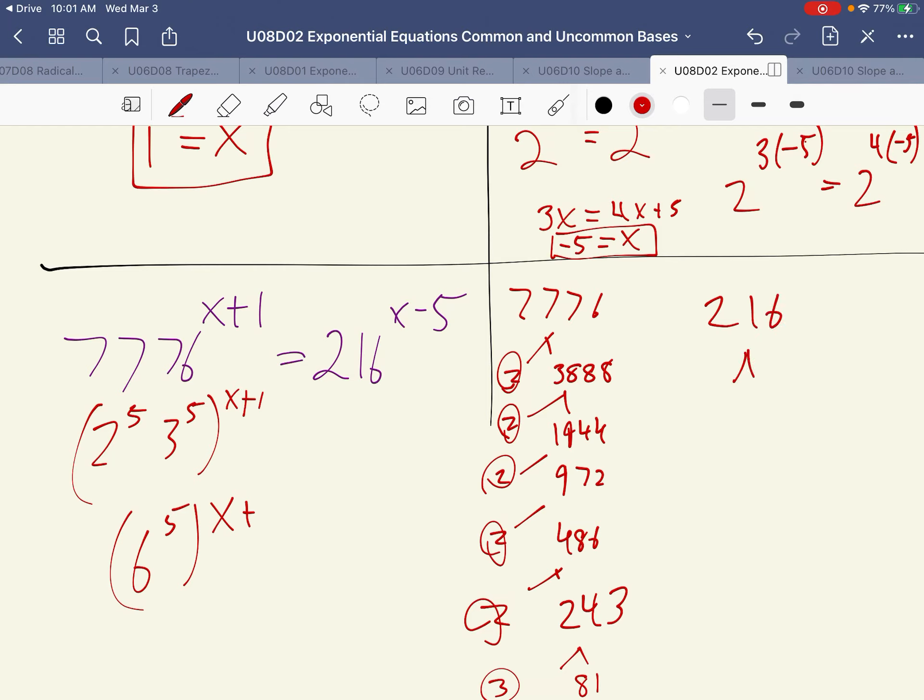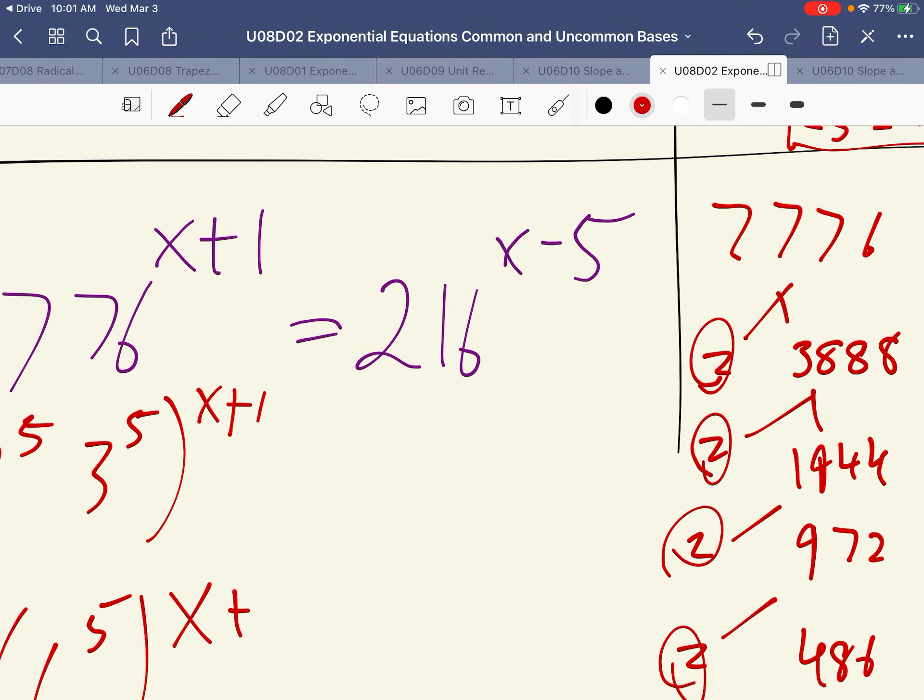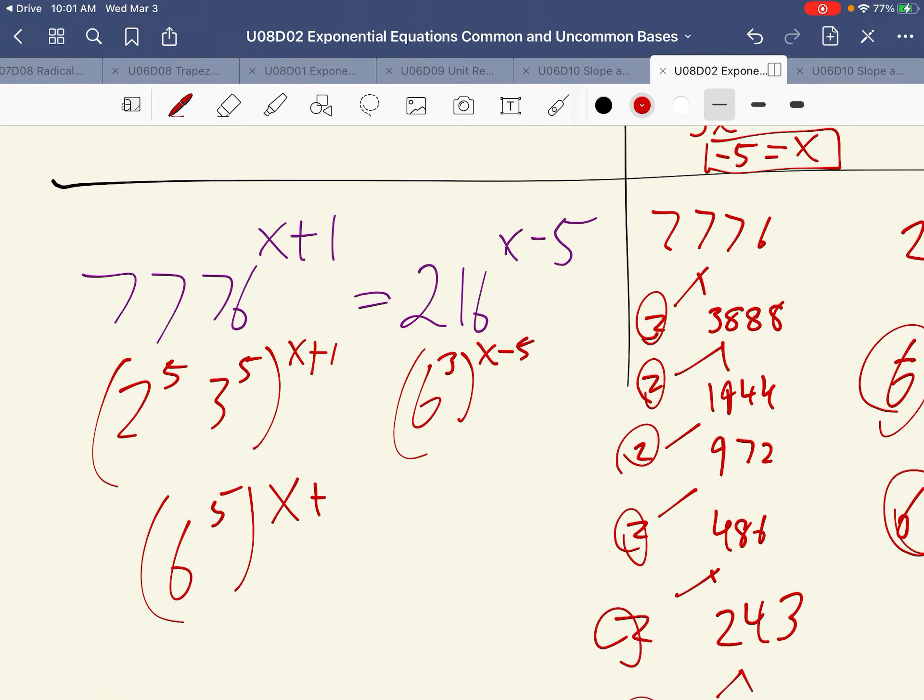So 216 divided by 6 is 36. So that's 6 and 36. This is going to be 6 and 6, and we'll just end with 6s. So this will become 6 to the 3rd to the x minus 5. So this will be equal to 6 to the 3rd x minus 5.